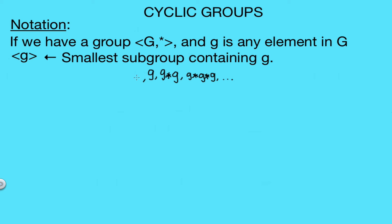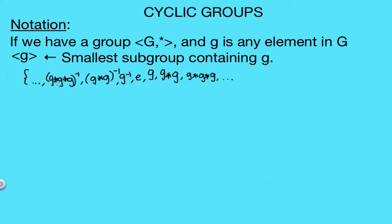We also know that the identity element e must be in our subgroup, and all elements must have inverses — so we need g inverse, g star g inverse, the inverse of g star g star g, and so on. Taking the set of all unique elements obtained by repeatedly applying the binary operation star to g gives us the smallest subgroup that contains g. We can see that g is a generator for this subgroup, so this equals ⟨g⟩, which is the notation we use to represent the cyclic subgroup generated by g.